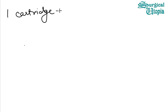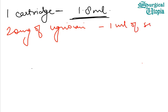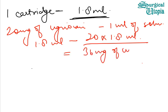Now, what will be the amount of lignocaine contained in one cartridge? One cartridge has a volume of 1.8 ml — that is the standard volume of one cartridge. Since 20 milligrams of lignocaine is contained in 1 ml, then 1.8 ml will contain 20 multiplied by 1.8, which equals 36 mg of lignocaine in one cartridge.